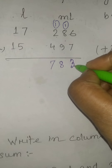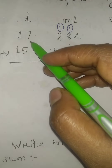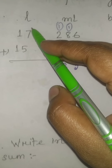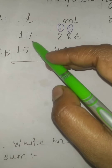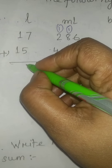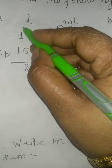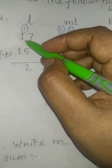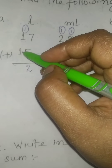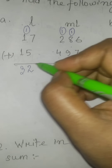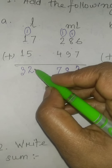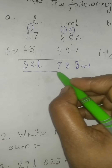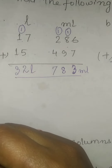So in the milliliter column we have got 783. On the litre side, we add 7 plus 5 — there is no number to carry forward — so 7 plus 5 is 12, carry forward 1. Then 1 plus 1 is 2, and 2 plus 1 is 3. So after doing the addition, we have got 32 litre, 783 milliliter. This is our answer.